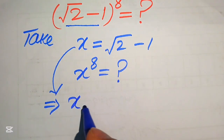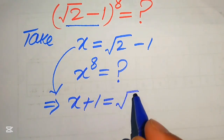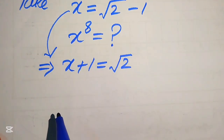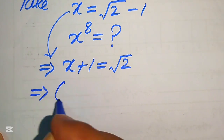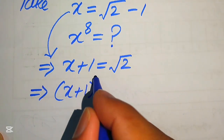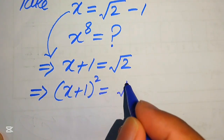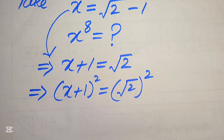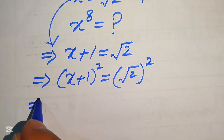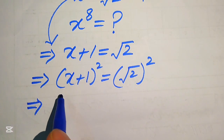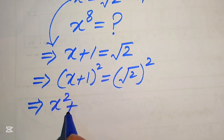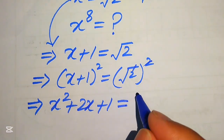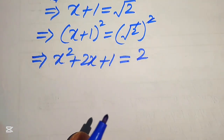We move the minus 1 to the left-hand side, giving x plus 1 equals the square root of 2. In the next step, we square both sides, so x plus 1 whole square equals the square root of 2 whole square. Applying the algebraic formula, x plus 1 whole square equals x squared plus 2x plus 1, which equals 2.